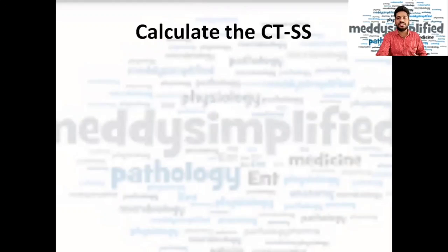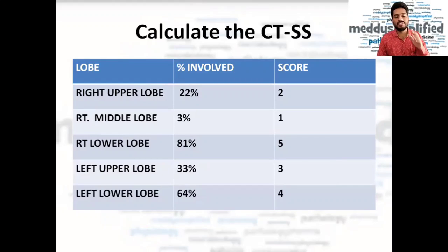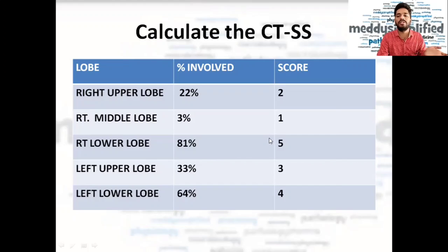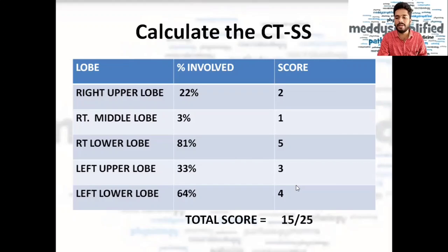Now let's calculate a CT severity score so we can perfect ourselves in case a question comes up in upcoming exams. In this example: the right upper lobe is 22% involved — that is five to twenty-five percent, so score two. The right middle lobe is three percent involved — less than five percent, so score one. The right lower lobe is 81% involved — more than 75%, so score five. The left upper lobe is 33% involved — twenty-six to forty-nine percent, so score three. The left lower lobe is 64% involved — fifty to seventy-five percent, so score four. The total comes to 15 by 25, which is a moderate case of COVID-19 pulmonary involvement.